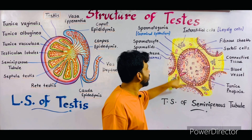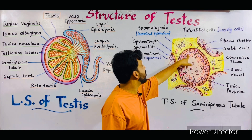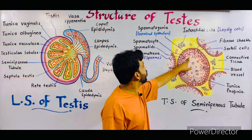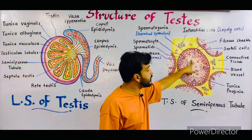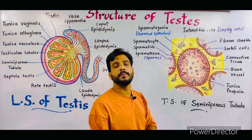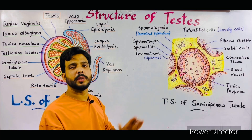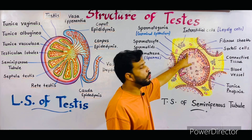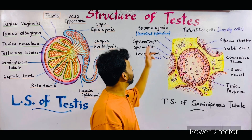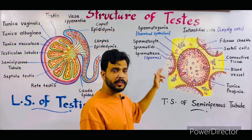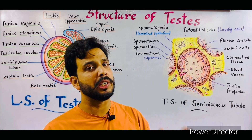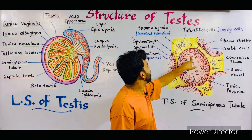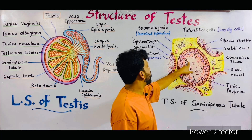So the outermost layer is spermatogonia, which give rise to spermatocytes — primary spermatocyte then secondary spermatocyte. These spermatocytes give rise to spermatids, and spermatids give rise to spermatozoa, which are finally converted into sperm. I made this sequence with different colors: brown color for spermatogonia, purple color for spermatocytes, orange color for spermatids, and dark black colored spermatozoa are the sperms.